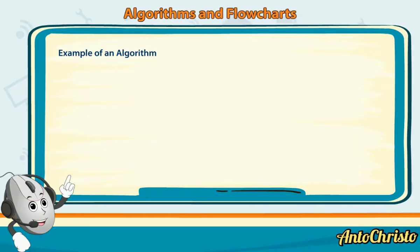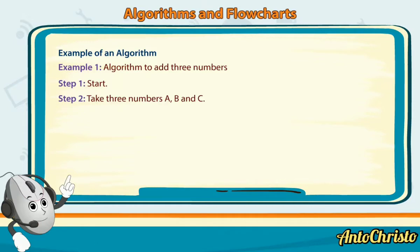Example of an algorithm. Example 1: Algorithm to add 3 numbers. Step 1: Start. Step 2: Take 3 numbers A, B and C. Step 3: Add the 3 numbers. Step 4: Print the result. Step 5: Stop.